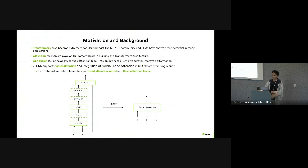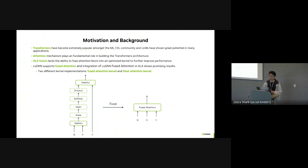For motivation: the transformer has become extremely popular in the deep learning community, and large language models have shown great potential in many applications. Attention plays a very fundamental role in building the transformer architecture. As for XLA right now, it has some general fusion like producer-consumer fusion and horizontal fusion, and some specific fusion like fusing SiGeLU into GEMM. But it lacks the ability to fuse the attention block into an optimized kernel for performance improvement. Integrating this kind of custom library into XLA to improve the performance of the attention block seemed like a good approach.